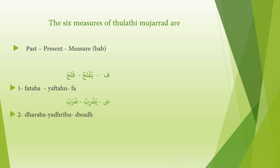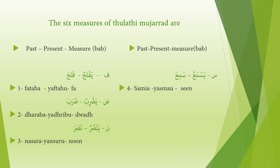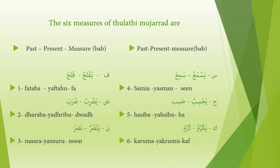Number two: daraba/yadribu, bab is dad. Number three: nasara/yansuru, the bab is noon. Number four: sami'a/yasma'u, the bab is seen. Number five: hasiba/yahsibu, the bab is ha. And number six: karuma/yakrumu, the bab is kaf.